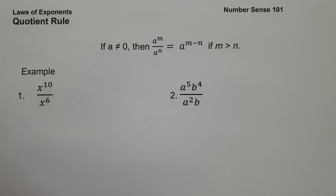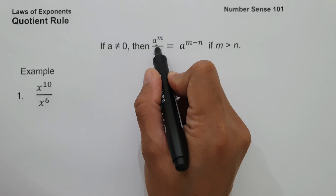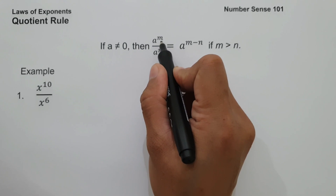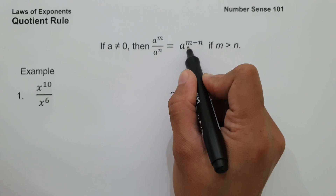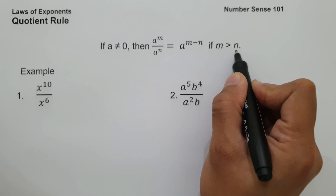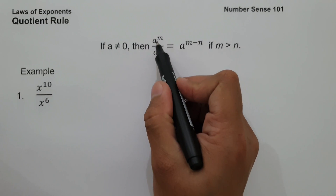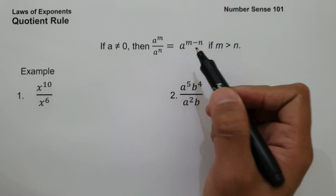Next, we have the quotient rule. When we say quotient rule, if base a is not equal to zero, then a raised to m divided by a raised to n, where m and n are exponents, it will give us a raised to m minus n if m is greater than n. Basically, when dividing integers with the same base, all you have to do is copy the base and subtract their exponents.